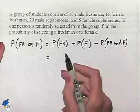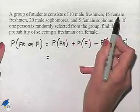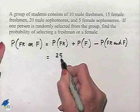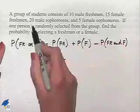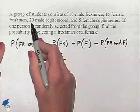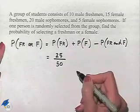Well let's see how many freshmen we have. We're going to have 10 male freshmen and 15 female freshmen, so we're going to have 25 out of our total group. Now we have 10 plus 15, which is 25, plus 20 plus 5, which is another 25, or in other words we have 50 students all together.